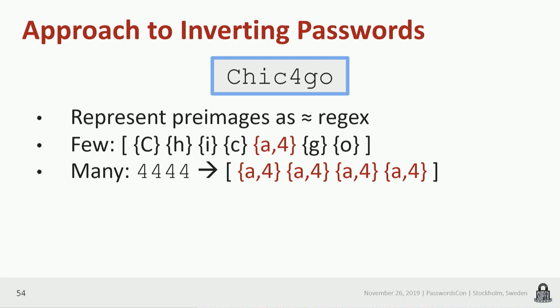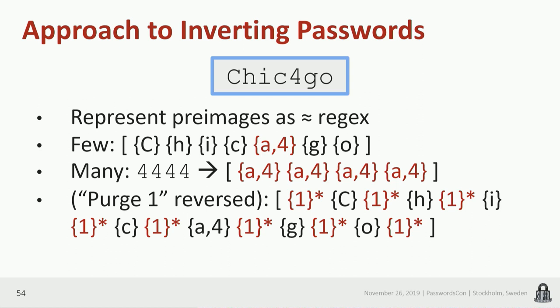You find a similar phenomenon not just for idiosyncratic passwords but for whole classes of rules. For example, a rule that purges all ones — when reversing this, there could be zero or more ones basically anywhere in the password. So what we do is: if there are a small number of possible pre-images, we look them up in a hash table. If there are a large number of pre-images, we represent the word list as a trie — a tree with prefixes. This works because there are lots of possible passwords sharing these prefixes, and as you start going through the first few characters, you quickly realize there's nothing in the word list with that prefix, so you've pruned a huge part of the space.